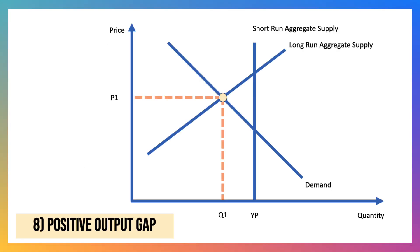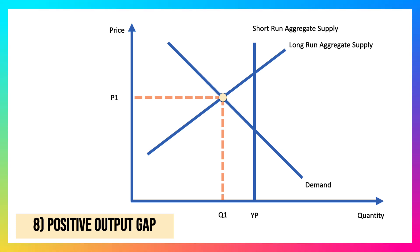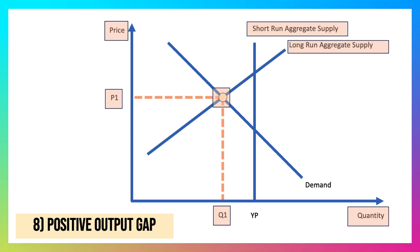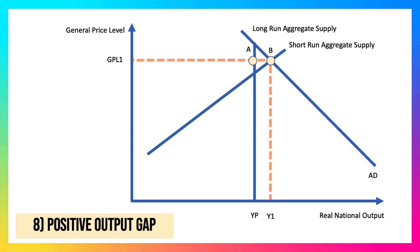Here's diagram disaster number eight. Is the student correctly drawing a positive output gap? This diagram is absolutely strewn with errors. It uses price and quantity, which is micro — it's a macro diagram, so that's incorrect. P1 and Q1 are also wrong. They've drawn an equilibrium to the left of potential output, so this shows a negative output gap. They've also mislabelled short-run and long-run aggregate supply — they should be the other way around. The correct diagram shows long-run and short-run aggregate supply with an equilibrium of Y1 to the right of potential output, giving a positive output gap of AB.